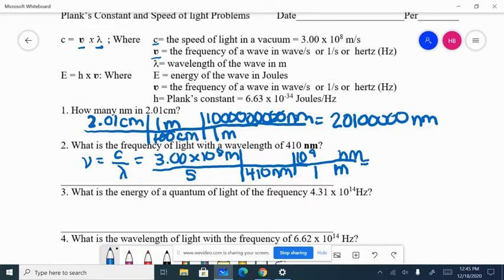Like such. So now my meters cancel out. My nanometers cancel out. And I'm left with units of seconds on the bottom, which is the same as hertz. Hertz is 1 over seconds, meaning there's no units on the top. And that's how we measure frequency.